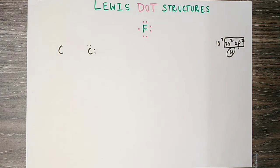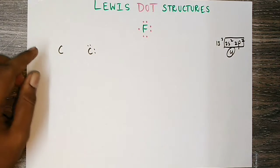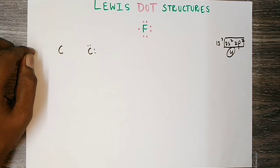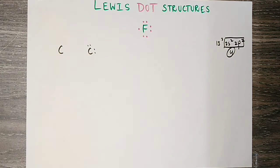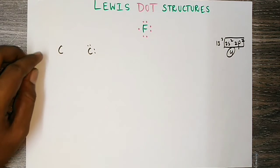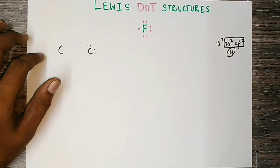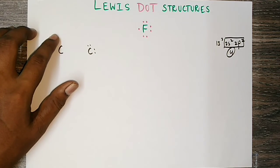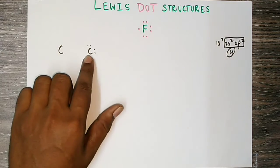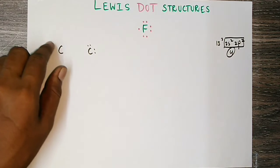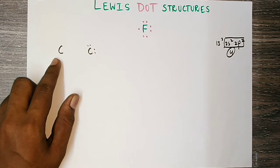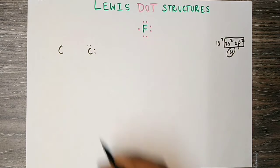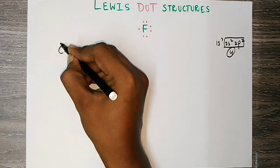We fill in the electrons one by one on each side. For Carbon, there are 4 valence electrons, so we place one electron on each of the 4 sides: top, bottom, left, and right. So Carbon's Lewis dot structure looks like this.